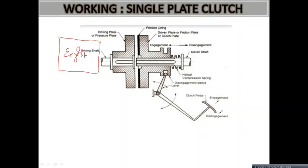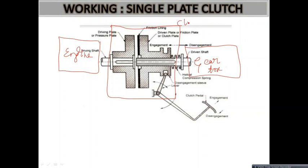Let us go through the working of a single plate clutch. The driving shaft is connected to the engine and the driven shaft is connected to the gearbox. Components associated with the single plate clutch are: a driving plate or pressure plate, a friction lining, a driven plate or friction plate or clutch plate, a helical compression spring, a disengagement sleeve, a lever, and a clutch pedal.